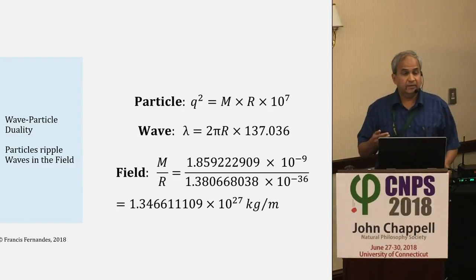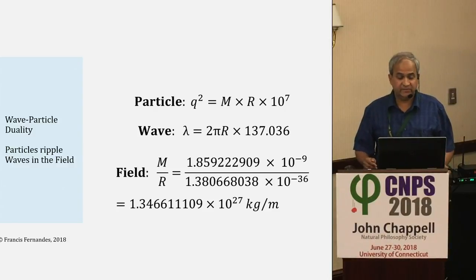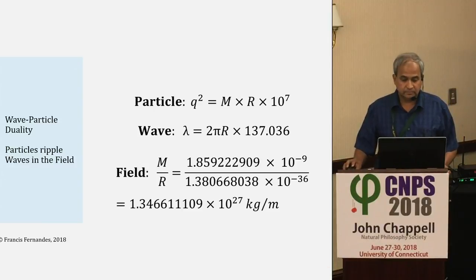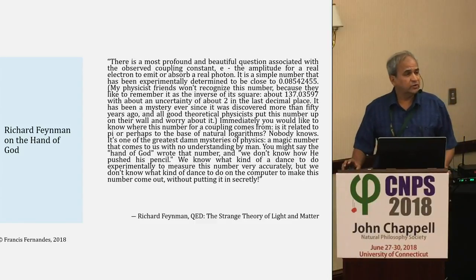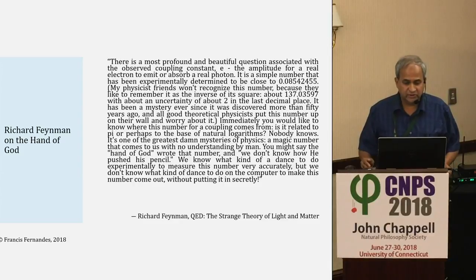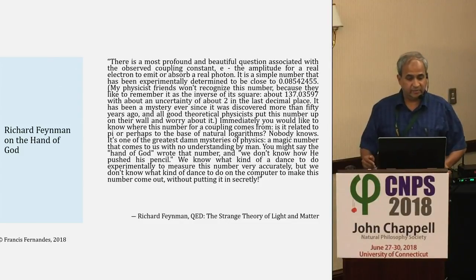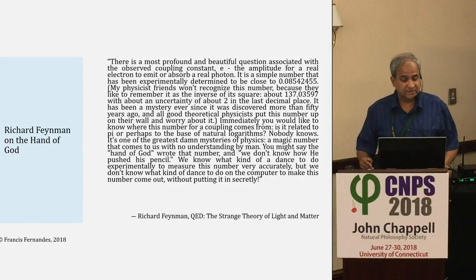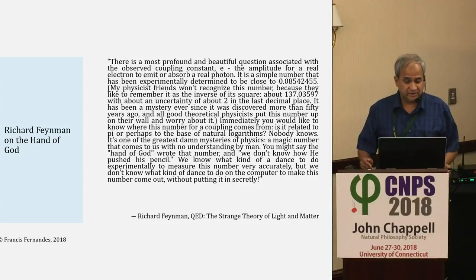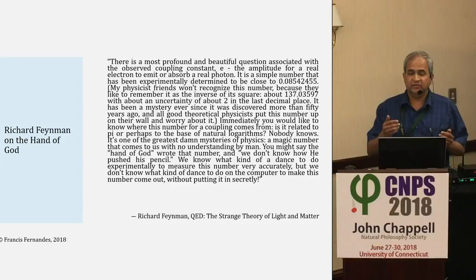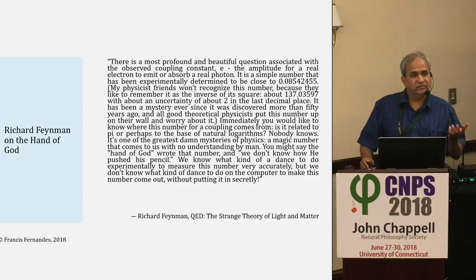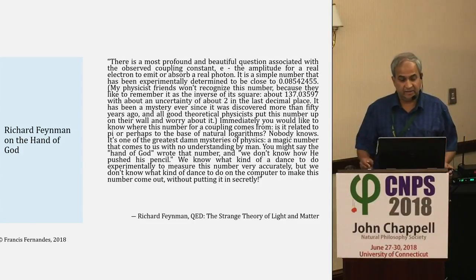Feynman said the fine structure constant 137.036 is the most profound and beautiful equation associated with the observed coupling constant, and that all good theoretical physicists put this number on their wall as a worry. He said the hand of God wrote this number and we don't know how he pushed the pencil. I've shown that 137 — the inverse of the hand of God number — is basically the ratio between the radius of the 186 ether and the Planck length. We don't know what kind of dance this does in the universe.